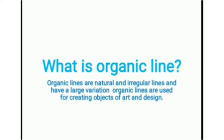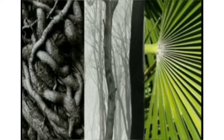What is an organic line? Organic lines are natural and irregular lines that have a large variation. Organic lines are used for creating objects of art and design. These lines are found in nature and come in many different varieties. I'll show you some organic lines — with these lines you can make any type of pattern or drawing.